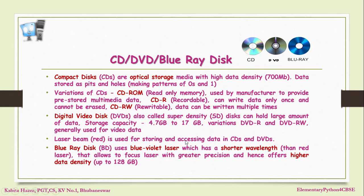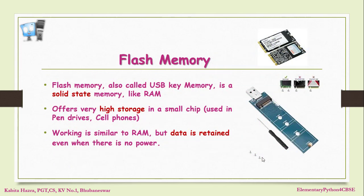Red laser beam technology is used for storing and accessing data in CDs and DVDs. Another variation is the Blu-ray disc, which uses a blue-violet laser that has a shorter wavelength than the red laser beam, allowing greater precision and hence higher data density up to 128 GB. A newer memory technology is flash memory, also known as USB key memory, which is a solid-state memory like RAM. It offers very high storage capacity in a very small chip and is used in cell phones, pen drives, etc. The working is similar to RAM but data is retained even when there is no power, just like static RAM.